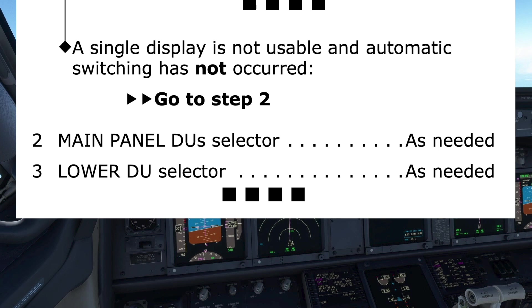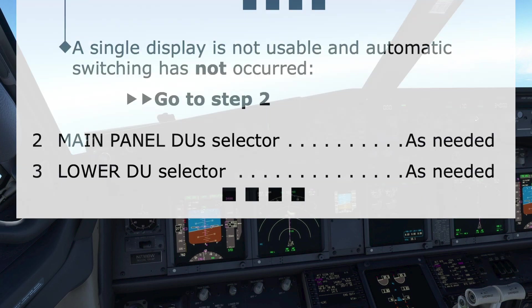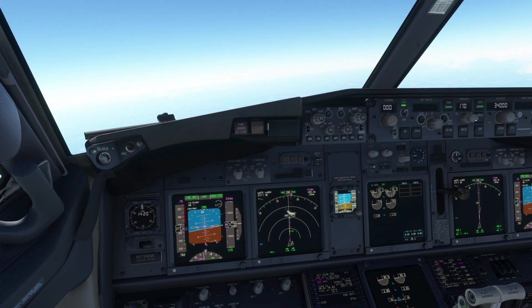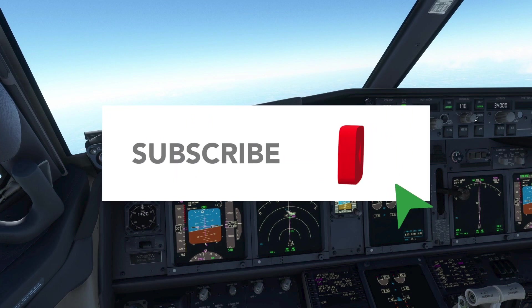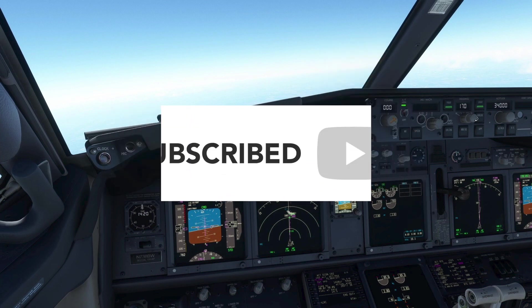In each case, the failure of a display unit would be dealt with in a systematic way: first establishing aircraft control, checking the QRC if applicable, then running the checklist in the QRH. On completion of the display failure checklist, the pilot monitoring states to the pilot flying: 'Display failure checklist complete.' That concludes our look at the non-normal procedure for a display failure. We also explored the operation of the selectors for the main panel DUs and lower DU. Please subscribe to learn of our future videos when we learn more about the 737.